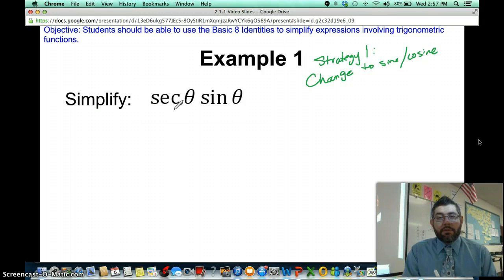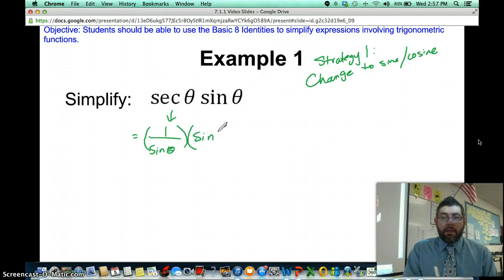Secant, however you want to pronounce it, tomato tomato. Secant is 1 over cosine. So this is 1 over cosine theta. Remember that theta is just a Greek symbol used for angles.